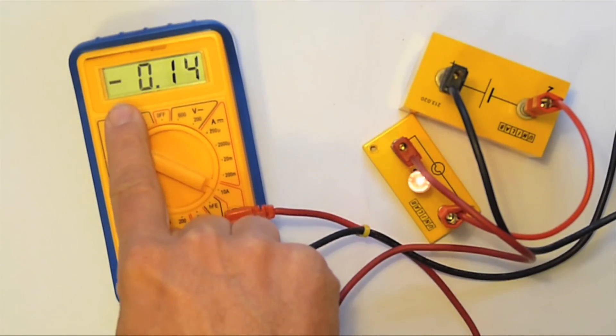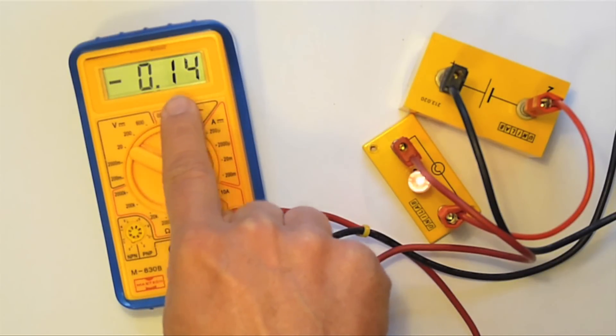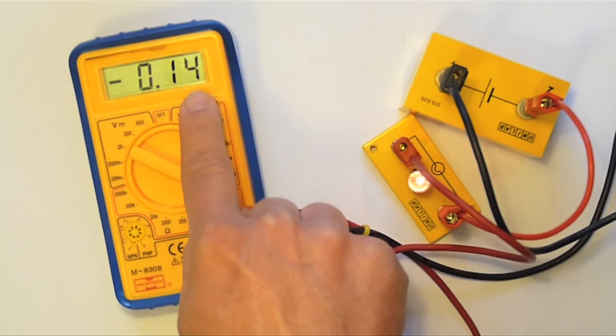The minus just means we have the opposite polarity. 0.14 amps. That's 140 milliamps.